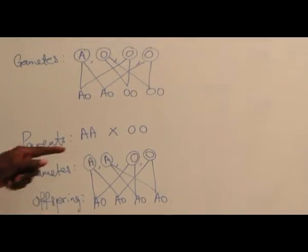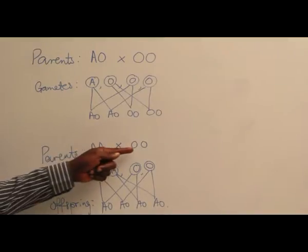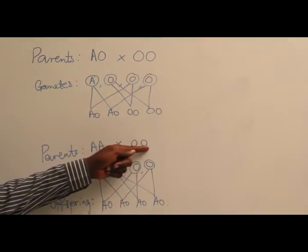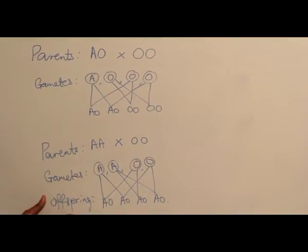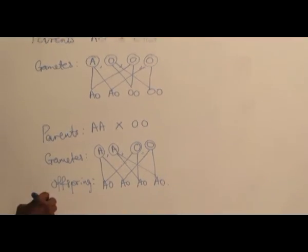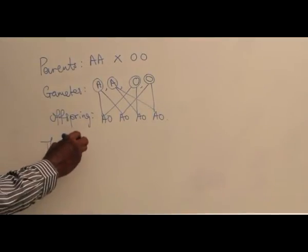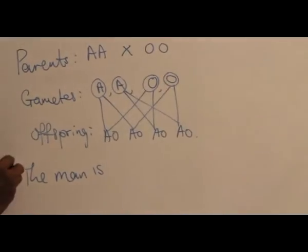If the father is homozygous A with his wife, he can only produce children with heterozygous A. So this child, the man, we say therefore...